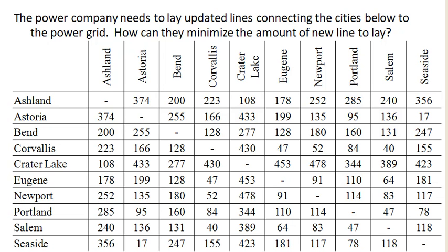Suppose a power company needs to lay updated lines connecting these cities to the power grid, and they want to minimize the amount of new line. They don't need a circuit or a path, and they don't need every city connected to every other — they just need a spanning tree, a way that power can get from any city to any other city. So to start out, we're going to list every connection between cities from cheapest to most expensive and start adding them to the graph following Kruskal's algorithm.